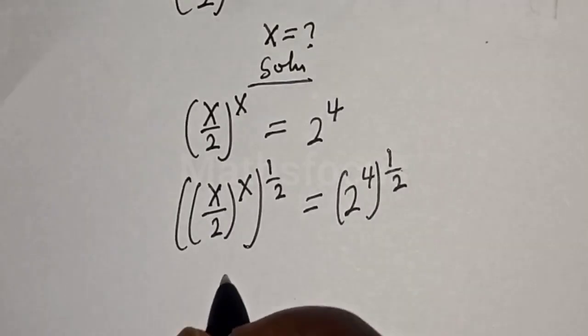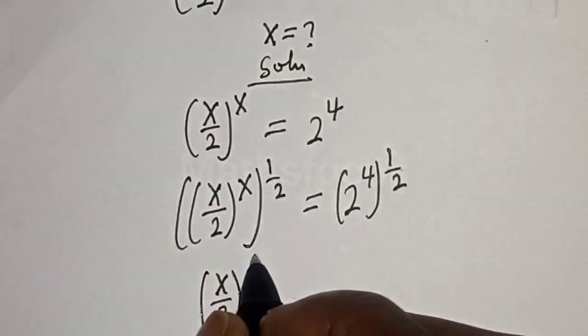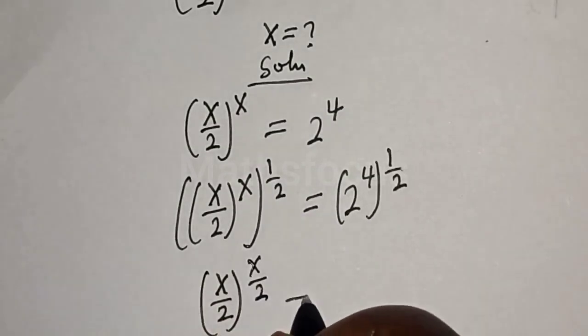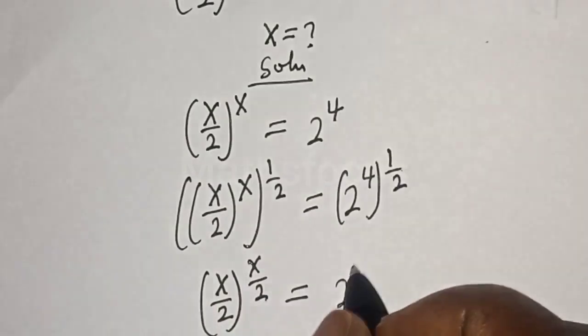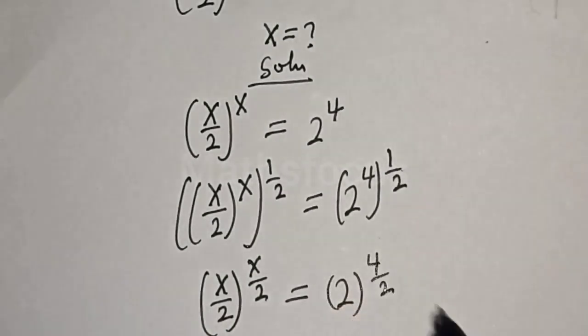So here we have S over 2 to the power of S times one-half. This is S over 2, equals 2 to the power of 4 times 1, that is 4 over 2.